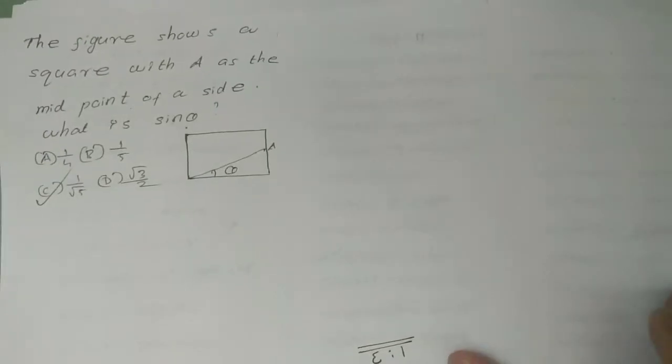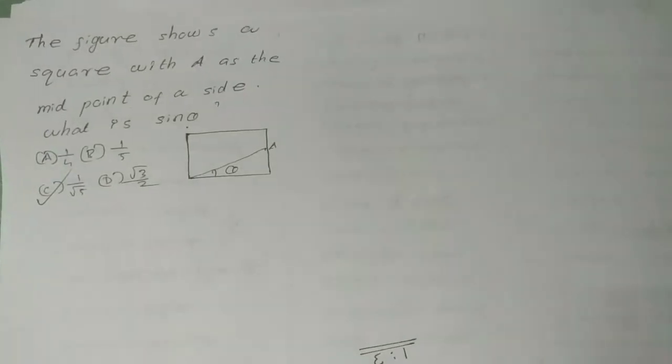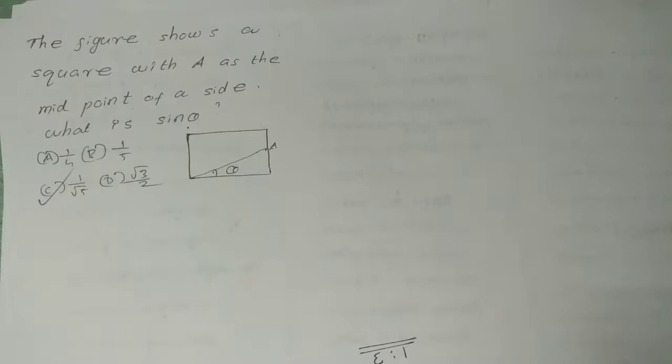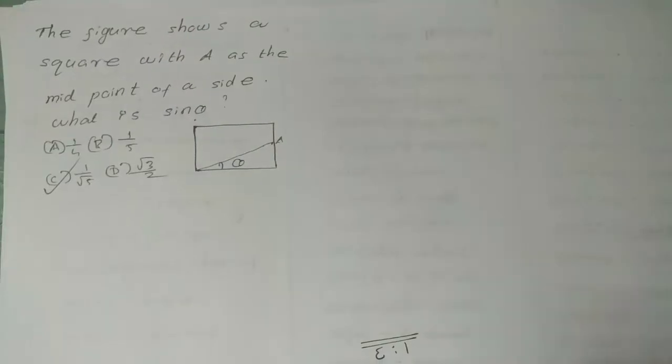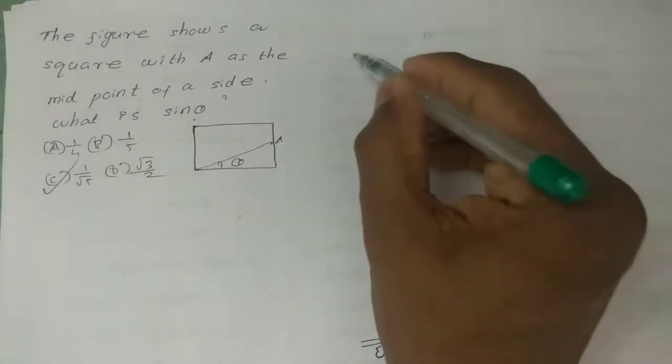Welcome to Candelabh Physics Academy. This video is going to discuss the category 3 mathematics February 2020 question paper analysis. The first question: the figure shows a square with side a, with a as the midpoint of a side. What is sine theta? Options: a) 1/4, b) 1/5, c) 1/root 5, d) root 3/5.